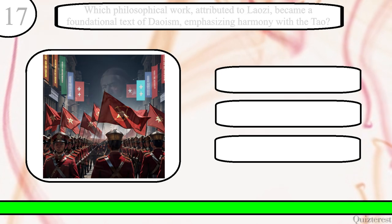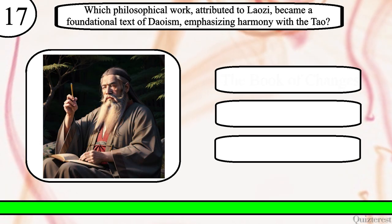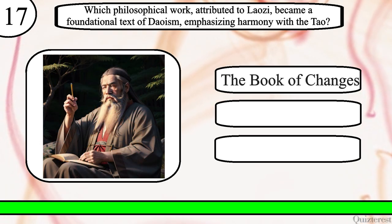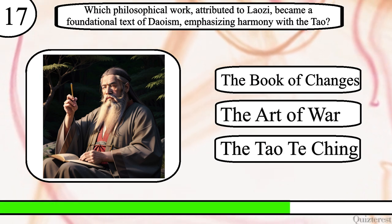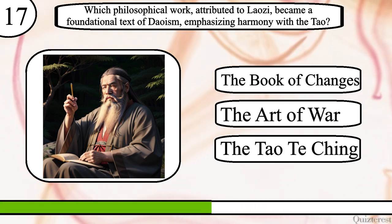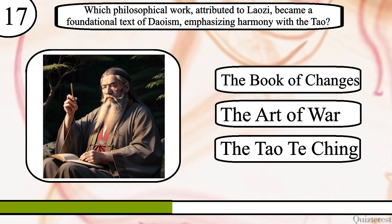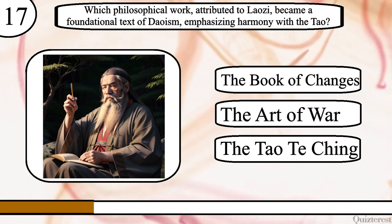Question 17. Which philosophical work, attributed to Laozi, became a foundational text of Taoism, emphasizing harmony with the Tao? The Book of Changes, The Art of War, or the Tao Te Ching? The correct answer is the Tao Te Ching.